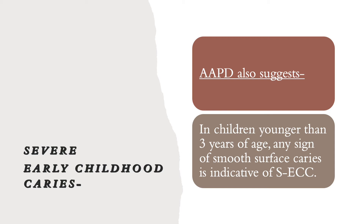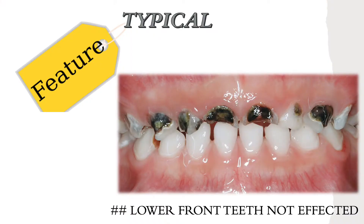Severe early childhood caries is also defined by the AAPD, the most recognized association in pediatric dentistry. A typical feature of either early childhood caries or severe early childhood caries is that the lower front teeth will not be affected at all by the decay process, because they are protected by the tongue while the child is sleeping.